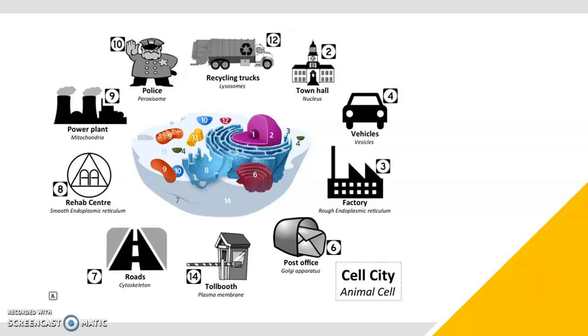So that vesicle will just transport it maybe from the rough endoplasmic reticulum to the Golgi apparatus, number six. And the Golgi apparatus acts like a post office. So a lot of things that are going to be secreted outside the cell, they'll get their final stamp there at the post office. So the last processing of anything leaving the cell will go through the Golgi apparatus. Then it'll hop on another vesicle and get to the cell membrane.